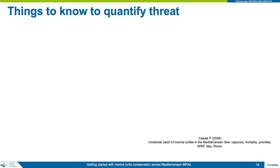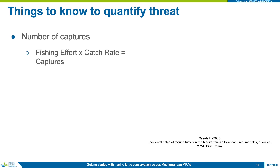To identify the severity of a fisheries threat we need to do a little mathematics. We want to know how many turtles are killed by a fishery over a set period, often a year, and how badly that is affecting the population. First we need to know how many turtles are captured — we get this by multiplying the amount of fishing effort by the capture rate. Fishing effort can be expressed as the length of net deployed, duration of trawls per day, or number of hooks set.